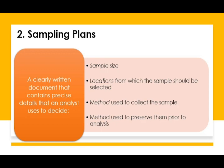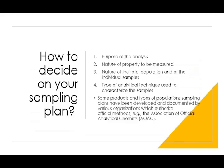What is a sampling plan? It has to be a clearly written document that contains precise details that analysts use to decide the sample size, the location where samples are going to be selected from, what methods are used to collect the sample, and how you are going to preserve the samples for analysis. How you decide your sample plan depends on the purpose of your analysis, the nature of properties to be measured, the nature of the total population and individual samples, and the types of analytical techniques you want to use. Some products may have established sampling procedures documented by organizations such as AOAC, though it doesn't cover all different types of analysis.